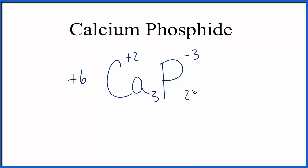Three times plus two, that's plus six. Two times minus three, that's minus six. So that works. The charges, they cancel out, give us a net charge of zero. We'll clean it up a bit. And the formula for calcium phosphide is Ca3P2.